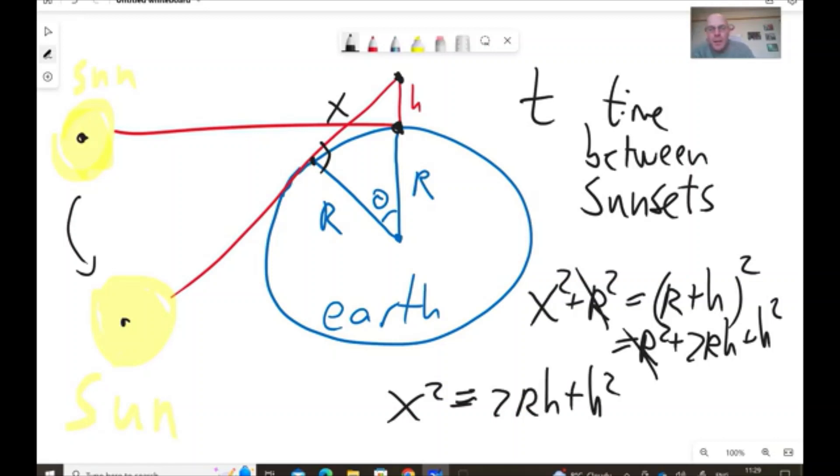So, we learned that x squared is 2rh plus h squared. And the radius of the Earth, well, we know it's 6,370 kilometers. So, we can neglect the second term and we get that approximately x squared is 2rh. That's the first relation we need.